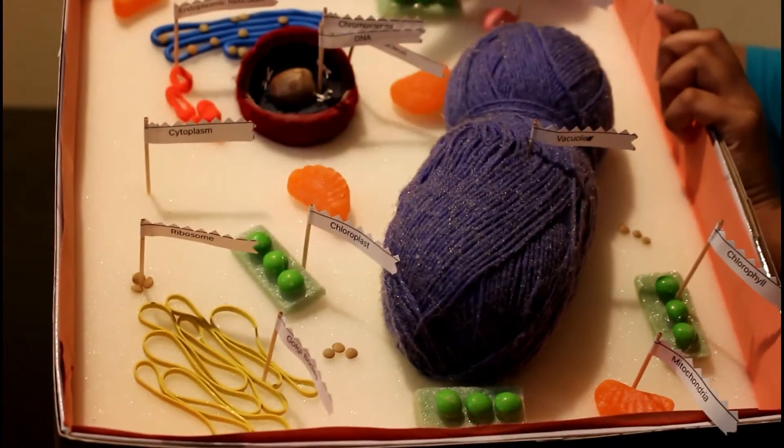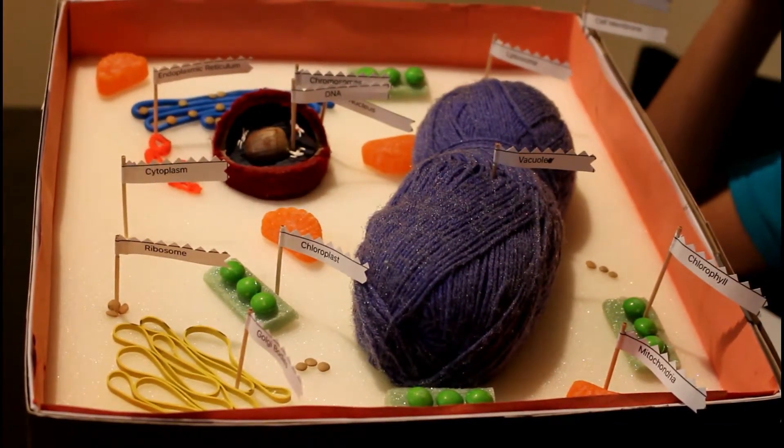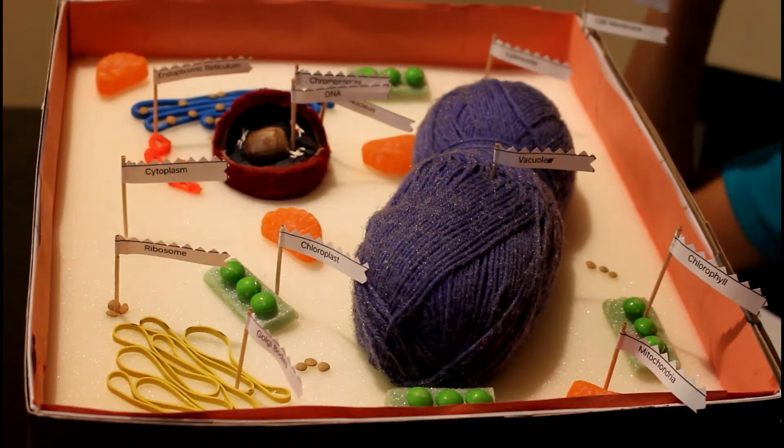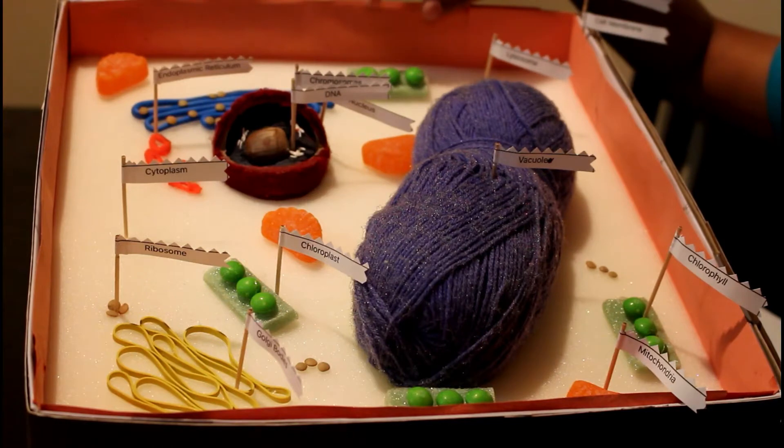This pink little circle right there is the lysosome. It is known as the stomach of the cell and it contains digestive enzymes. They help with digestion and waste removal.